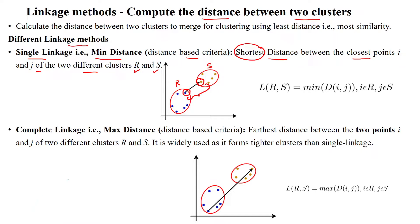If you take other data points, they have more distance than the already considered closest data points. So single linkage is used to find out the shortest distance between two data points in two different clusters. That is given as the minimum distance between data point i, belonging to cluster r, and data point j, belonging to cluster s.